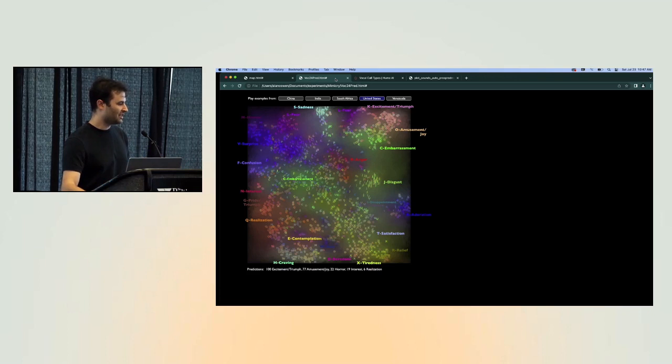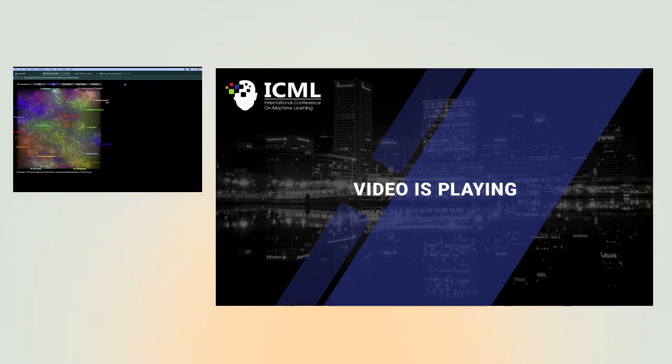So each of these letters is actually not a single vocal burst, but imitations of that vocal burst in a given culture. So in, for example, China, we can look at imitations of a given laugh, or an embarrassment sound, interest, surprise. And so if we take a given surprise sound, we can look in India and see how that sounds, in South Africa, in the United States, and in Venezuela. So all of these, not all of these, but some of these were included in the Expo dataset, but we didn't include everything.